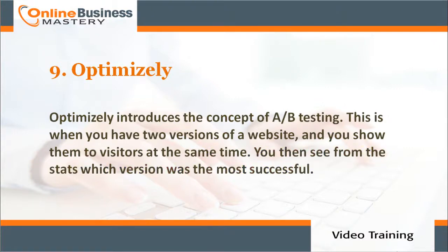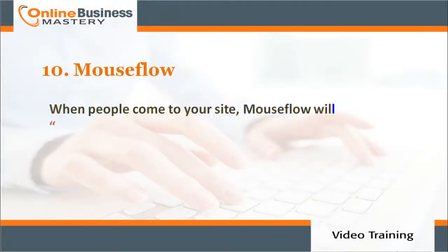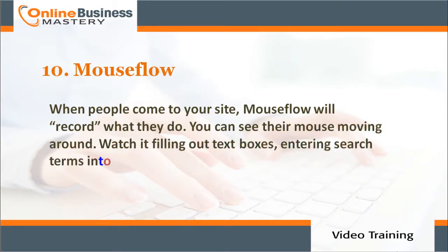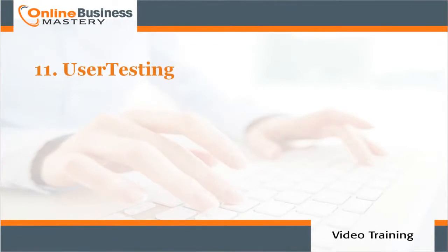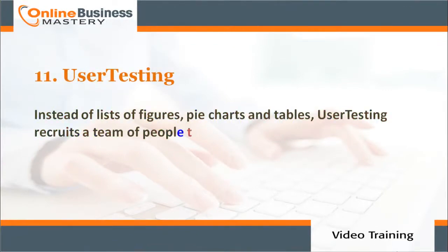Number nine: Optimizely. Optimizely introduces the concept of A/B testing — this is when you have two versions of a website and show them to visitors at the same time. You then see from the stats which version was the most successful. Number ten: Mouseflow. When people come to your site, Mouseflow will record what they do. You can see their mouse moving around, watch it fill out text boxes, enter search terms, and much more.